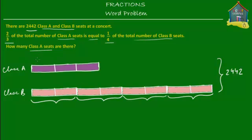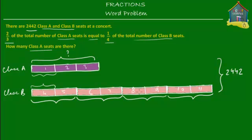Can you calculate how many Class A seats there are from this information? It's quite easy. Since each purple unit is the same size as one pink unit, there are a total of 1, 2, 3, 4, 5, 6, 7, 8, 9, 10, and 11 units — and 11 units are equal to 2,442.